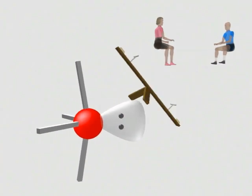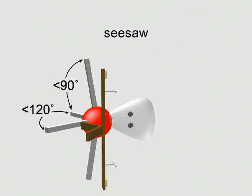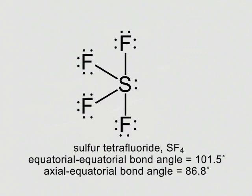With one lone pair, the object has a seesaw shape. Sulfur tetrafluoride is an example.